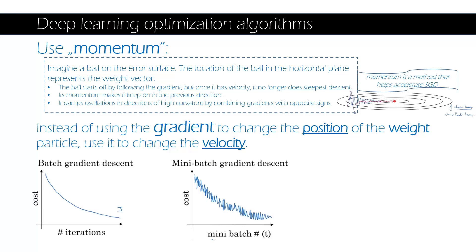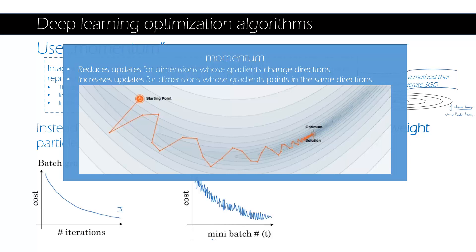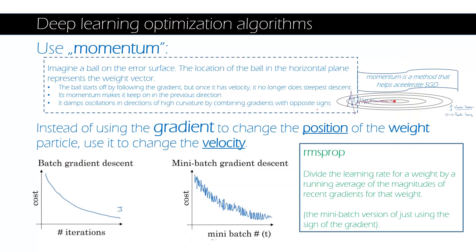So what is momentum? Momentum is a method that helps to accelerate stochastic gradient descent. It accelerates toward the local minimum. Momentum reduces updates for dimensions whose gradients change directions, and it increases updates for dimensions whose gradients point in the same direction.